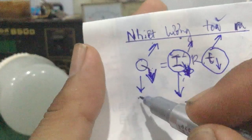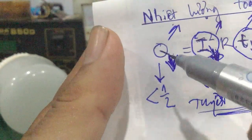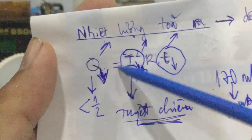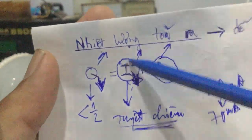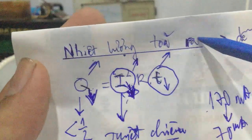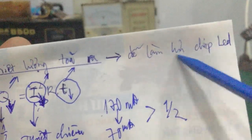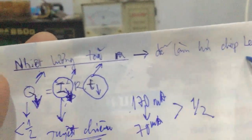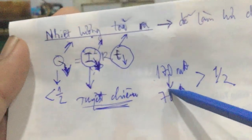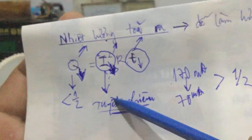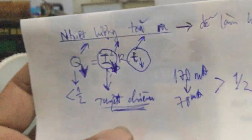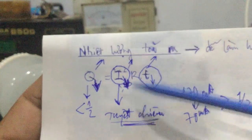Như vậy, cách giảm áp dụng tuyệt chiêu - tức là giảm trị số Y cường độ dòng điện - sẽ làm giảm nhiệt lượng tỏa ra trên đèn LED, hạn chế hư chip LED. Đây là cách hiệu quả. Đây là cách thứ nhất: bằng cách giảm cường độ dòng điện đi qua bóng đèn LED.